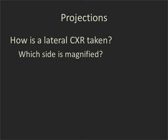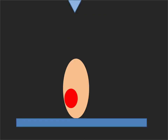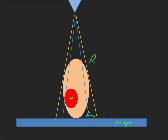Let's move on to a lateral chest x-ray. In the lateral, the patient's left side is always the one that goes against the image receptor and the right side is further away, so the patient's right side is going to be magnified more than their left side. If you watch the video on deciding which diaphragm is which, you'll see how we use this fact to our advantage.